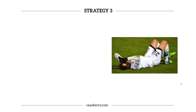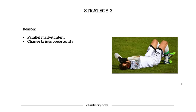Strategy three is probably my favourite — it's around parallel market intent. The reason it works is that there are parallel markets that have the same intent, even though they are different markets. When there's change in one area, a similar market has to change elsewhere, and it's fastest finger first. In horse racing, for example, activity at Cheltenham will impact prices at Aintree around the Grand National meeting about a month later — you can catch a price movement at Aintree by watching what's happening at Cheltenham in the home straight.